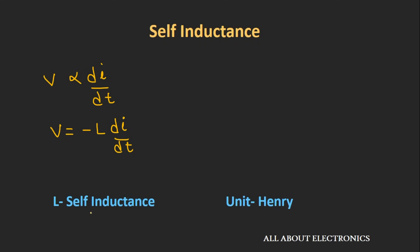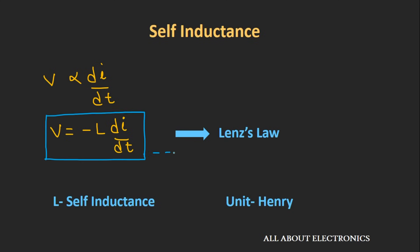The unit of self inductance or inductance is the Henry. Here you will observe a negative sign, and this negative sign is because of Lenz's law. According to Lenz's law, the generated EMF or voltage opposes the rate of change of current through which it has been generated. This negative sign implies that the voltage generated opposes the rate of change of current. Let's call this equation number 1.